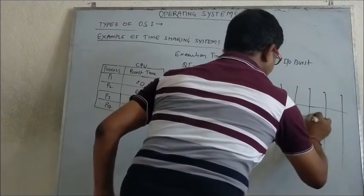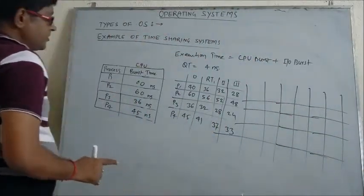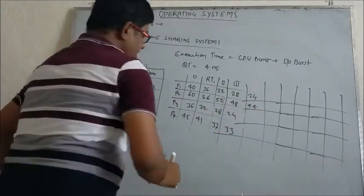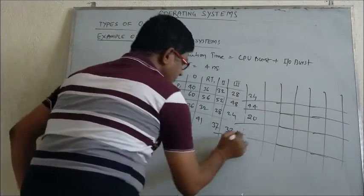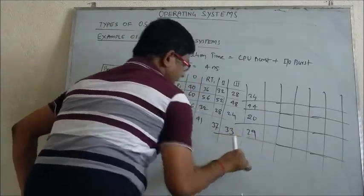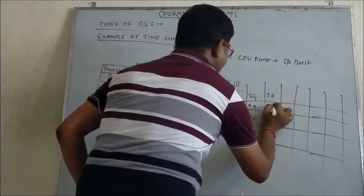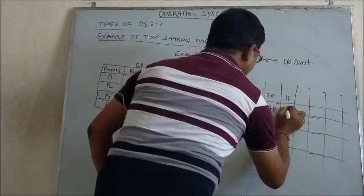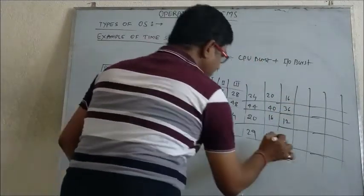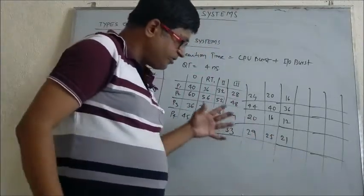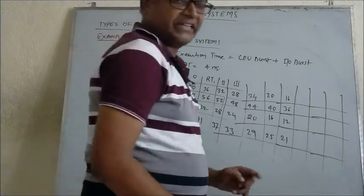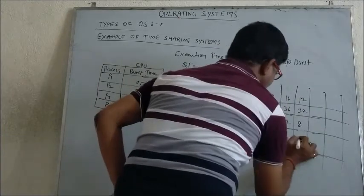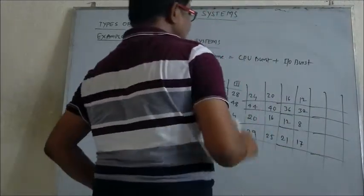Continuing the iterations: after the 4th iteration the remaining times are P1 = 20, P2 = 44, P3 = 20, P4 = 29. After the 5th: P1 = 20, P2 = 40, P3 = 16, P4 = 25. After the 6th: P1 = 16, P2 = 36, P3 = 12, P4 = 21. After the 7th: P1 = 12, P2 = 32, P3 = 8, P4 = 17. You can see the remaining time is getting lower and lower.